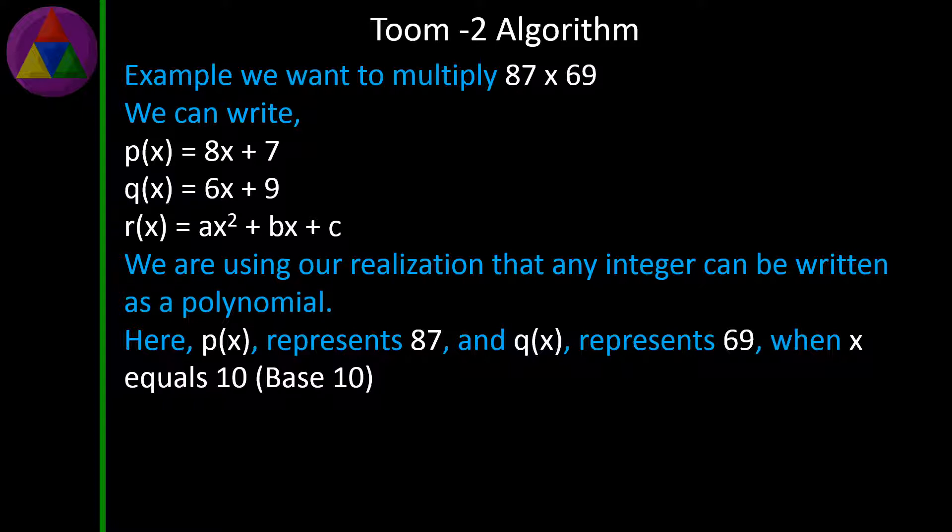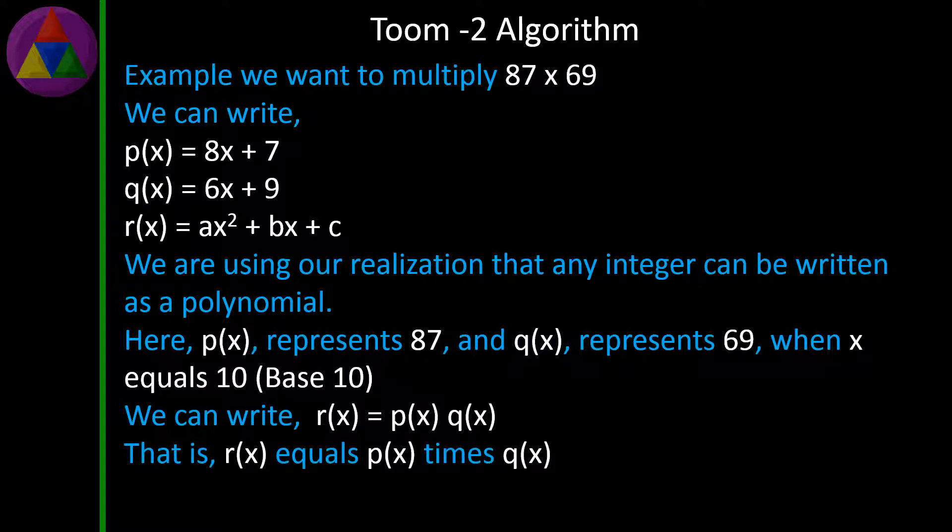When x = 10 base 10, we can write R(x) = P(x) × Q(x). So R(x) = ax² + bx + c = (8x + 7) × (6x + 9).